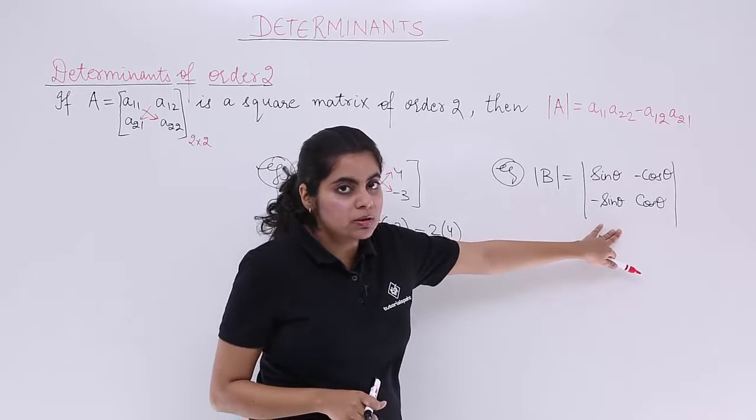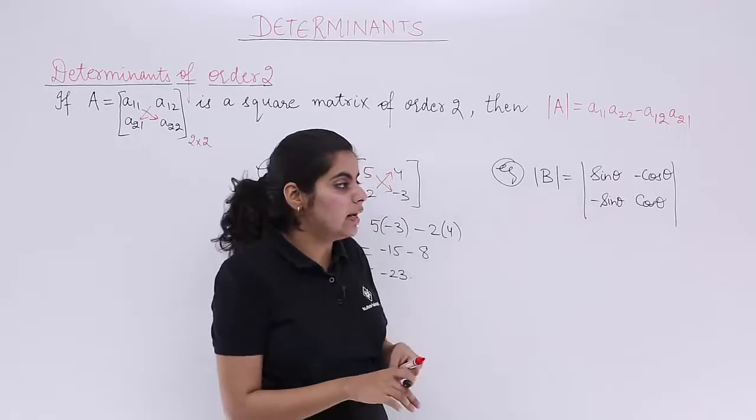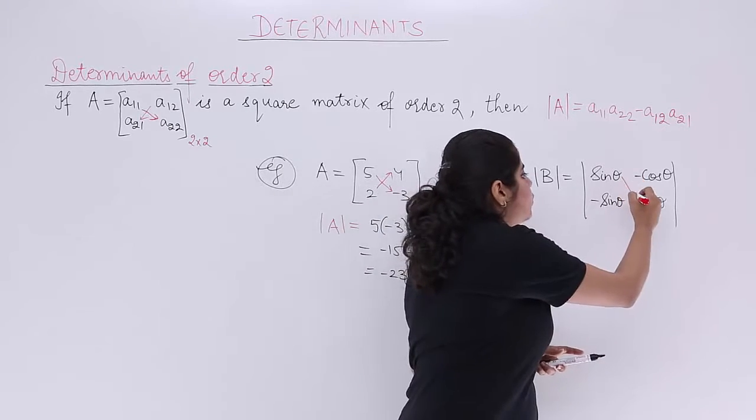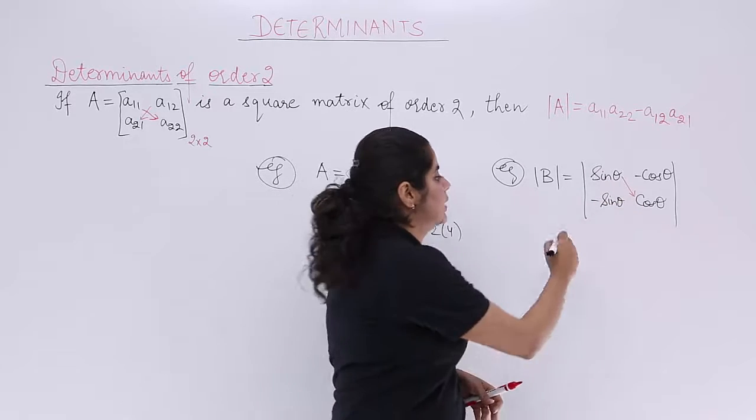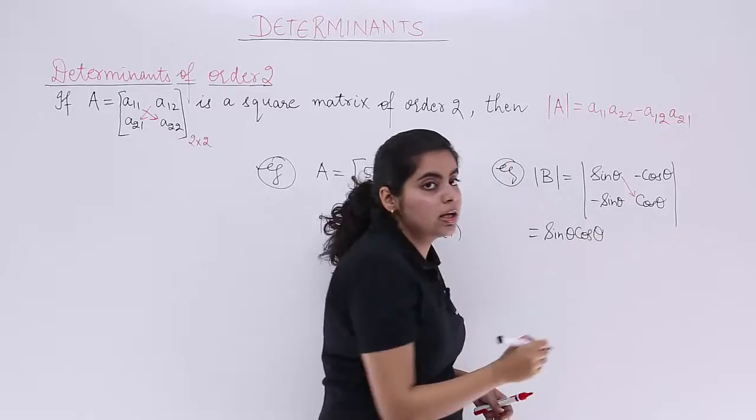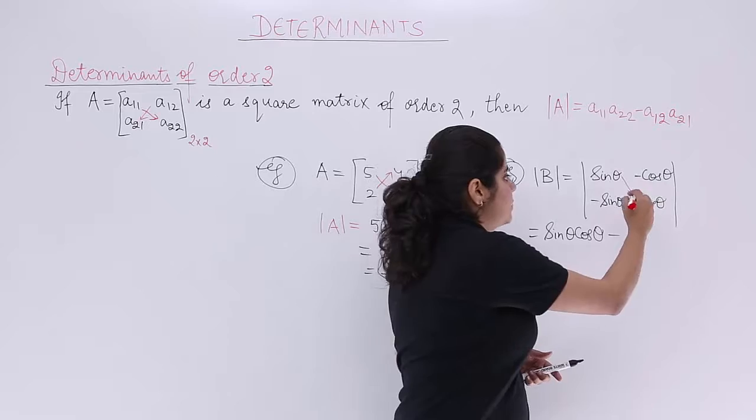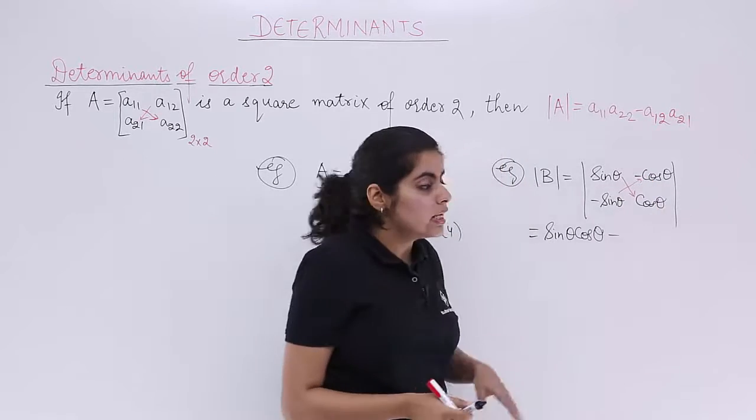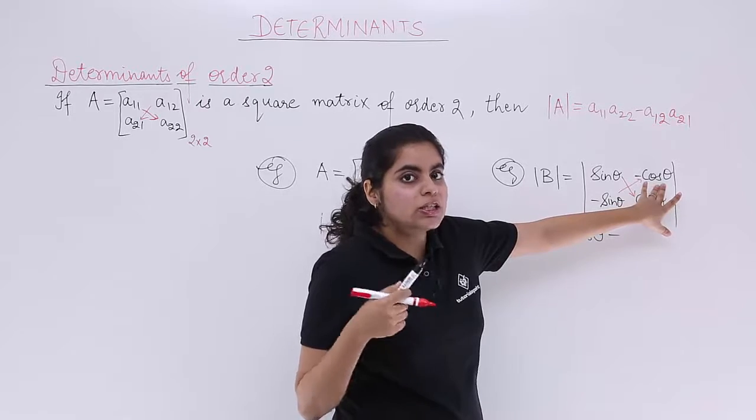Now computing det or determinant means what? Following the trick or the formula, right? So you have to cross multiply. So what it becomes? Sin theta multiply cos theta. It becomes sin theta cos theta. Minus sign has to be written. You write minus. And then you again cross multiply. So what is it? It is minus sin theta into minus cos theta which is sin theta cos theta.